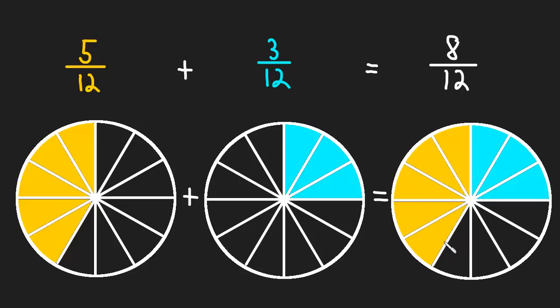And indeed, that's exactly what happens. When we add them together, we just now have a total of eight out of the twelve pieces. Now the thing that's allowing us to add is the fact that we're talking about the same sized pieces. Notice that that corresponds to the fact that the denominators are the same.